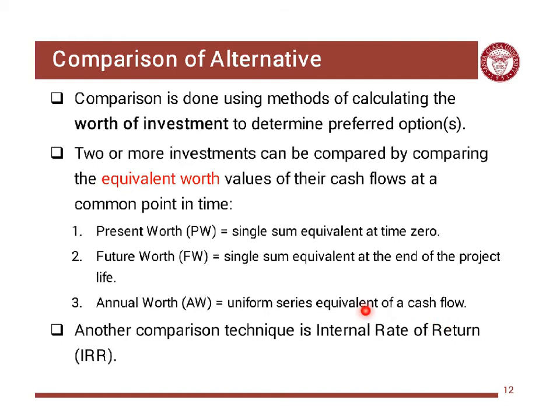The last method is the internal rate of return, which has advantages over the other three methods and will be covered in a different lesson. In this lesson we'll cover present worth and future worth, which are straightforward, and we'll see how to apply them considering different lives using the least common multiple method.